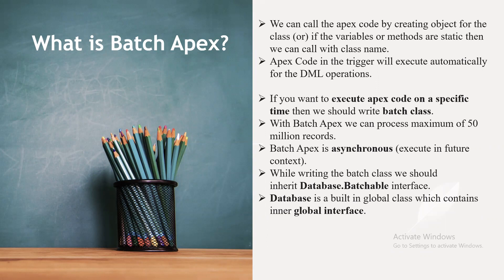For Apex triggers, the trigger will execute automatically for DML operations. The main reason we need Batch Apex is if you want to execute Apex code at a specific time, we should write a batch class. The main purpose of Batch Apex is to execute at a specific time, and we can process a maximum of 50 million records at a time. Batch Apex is asynchronous and executed in a future context.